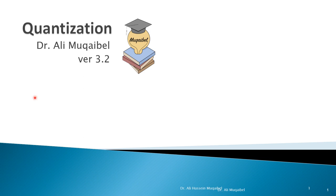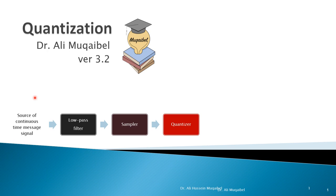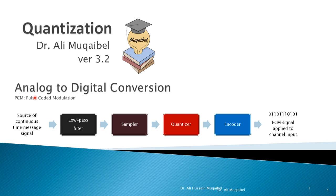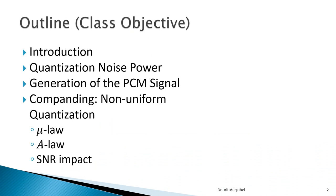Quantization is one of the important steps in converting analog to digital signals. Recall we go through sampling and then quantization. We are done with sampling, and now it's time to talk about quantization. In the process of analog-to-digital conversion, we have discussed low-pass filtering, the anti-aliasing filter, sampling, and now quantization.